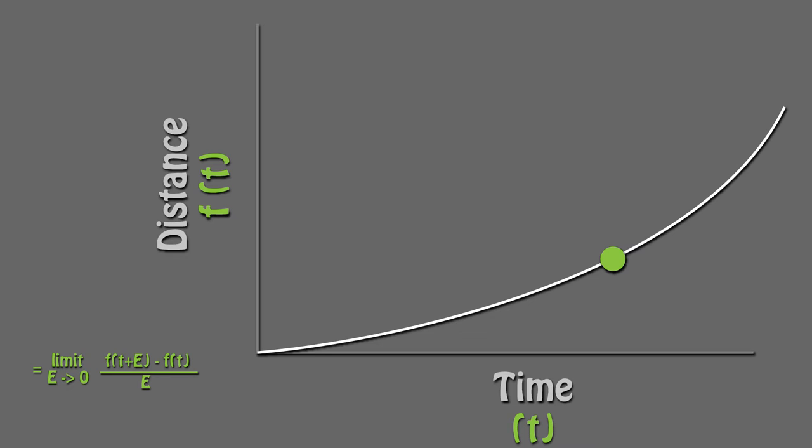An alternative way of stating this would be to say that we are looking at the limit of the change in position over the change in time as time two approaches closer and closer to time one, shrinking the gap.